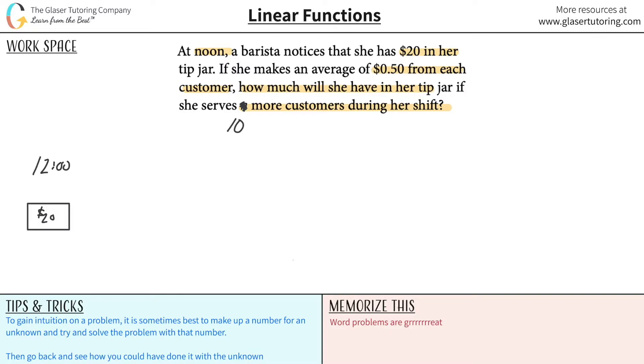And she's going to make an average of 50 cents from each customer now. So let's say now 10 more customers come in the door. How much in total will those 10 customers give her? You might say, well, if each customer gives her 50 cents and 10 more come in, well, isn't that just five bucks? And that would be correct.